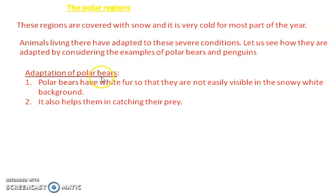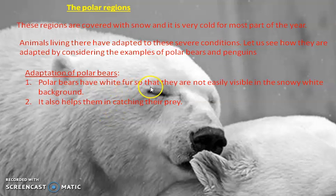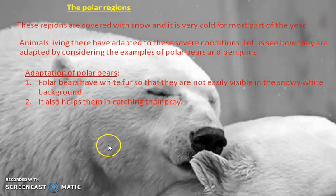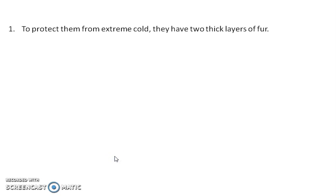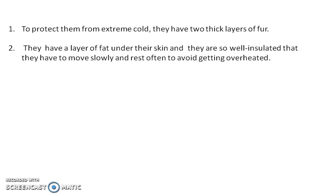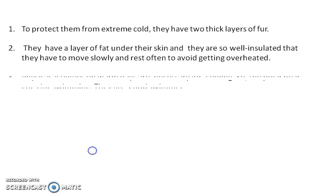Let's look at the adaptation of the polar bear. Polar bears are white in color, and their fur makes them difficult to see because the fur is white and the snow is white — so they are nicely camouflaged behind the snow, which also helps them catch prey. They have thick fur and a layer of fat under the skin which insulates them. Because of this insulation, their body gets heated up, so they need to rest in between.